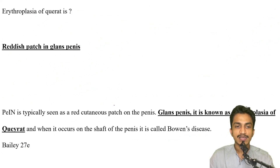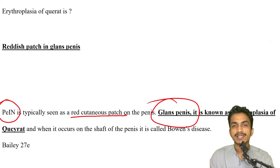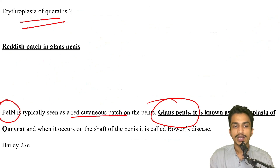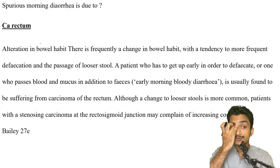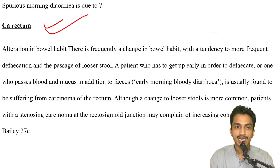From Bailey: erythroplasia of Queyrat versus Bowen's disease. If a red cutaneous patch — penile intraepithelial neoplasia — is present on the glans penis, it is erythroplasia of Queyrat. If it is on the shaft, it is Bowen's disease. So erythroplasia of Queyrat is a red patch on the glans penis.